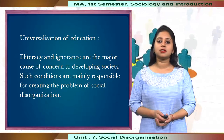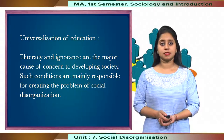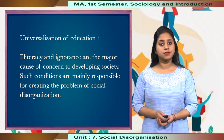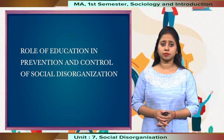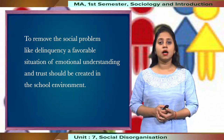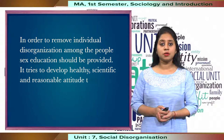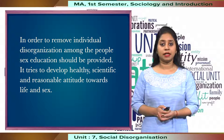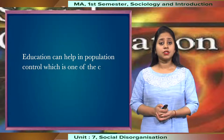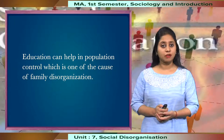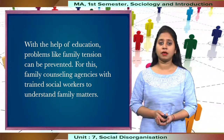Finally, the universalisation of education. Illiteracy and ignorance is one of the major causes of concern to developing societies and is mainly responsible for creating problems of social disorganisation. Education has an immense role in controlling social disorganisation. To remove problems like delinquency, a favourable situation of emotional understanding and trust should be created in the school environment. Sex education should be provided to develop a healthy, scientific, and reasonable attitude towards life. Education can also help in population control, which is one of the main causes of family disorganisation, and problems like family tension can be prevented through family counselling.